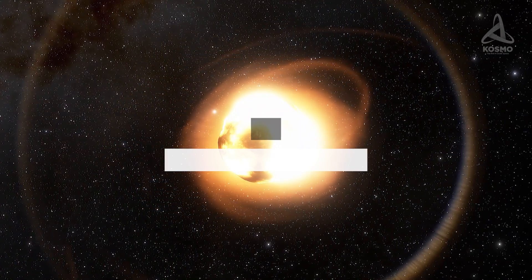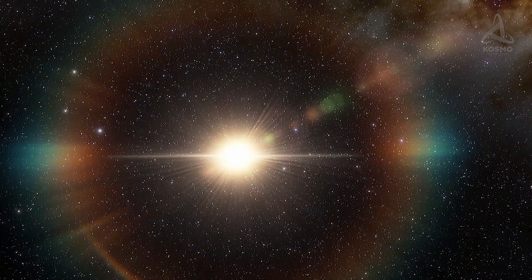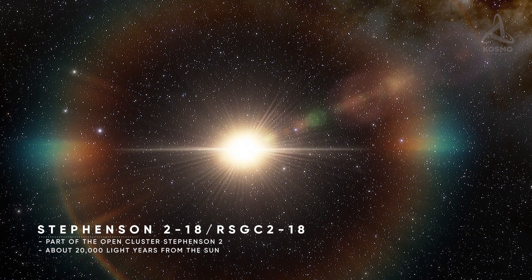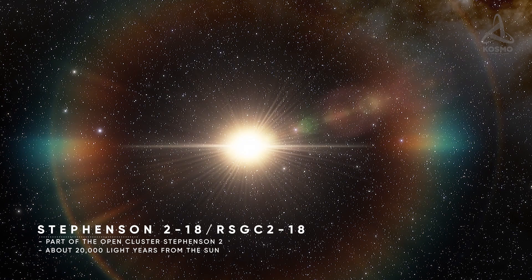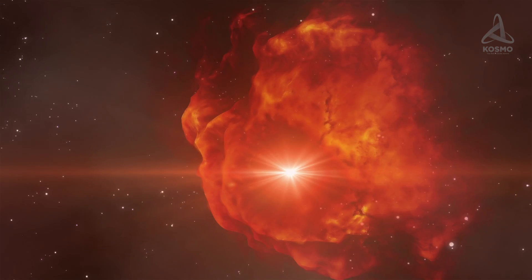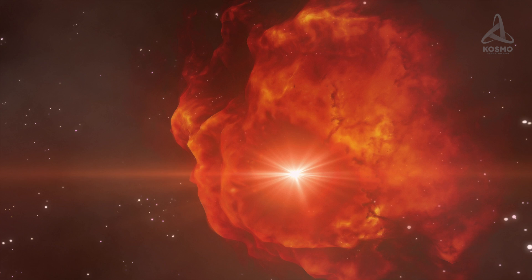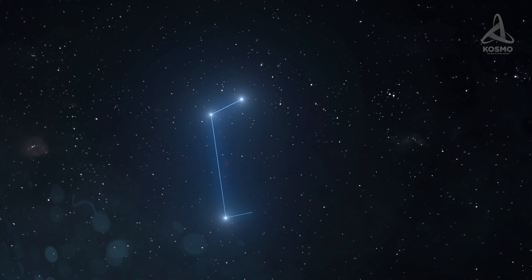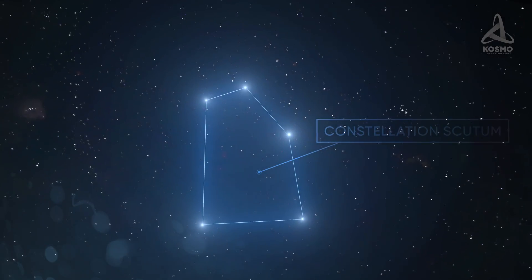The star lies approximately 20,000 light-years away from the sun and is part of the open cluster Stevenson 2. Although, according to some scientists, this space object should not be associated with the Stevenson cluster. Either way, Stevenson 2-18 is located in the Scutum constellation and continues to bear its original name.